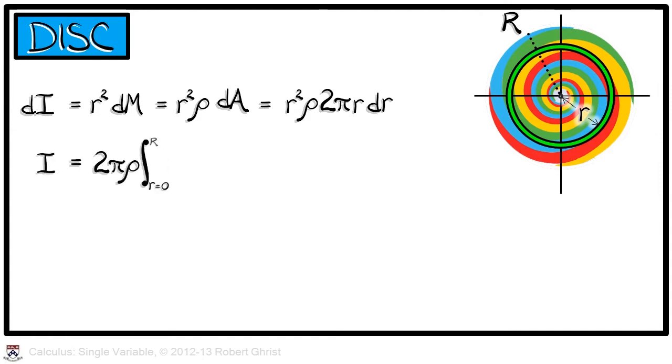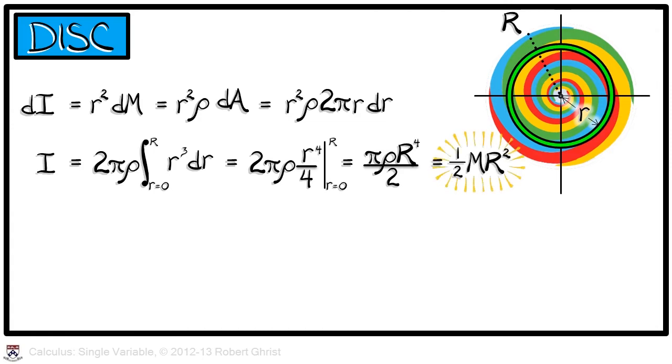This integral is not going to be so bad. We have to integrate R cubed dr as R goes from 0 to capital R. That, of course, gives us an answer of pi rho over 2 times capital R to the fourth. Substituting in the mass, we obtain one-half M R squared.